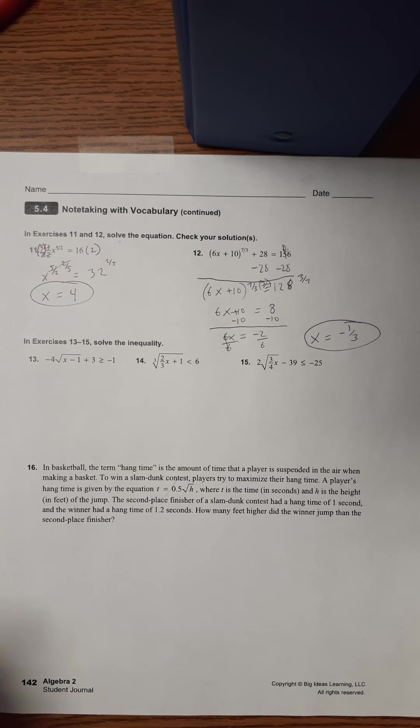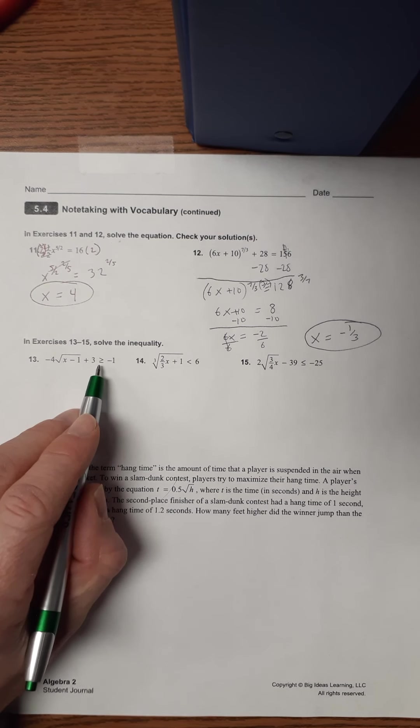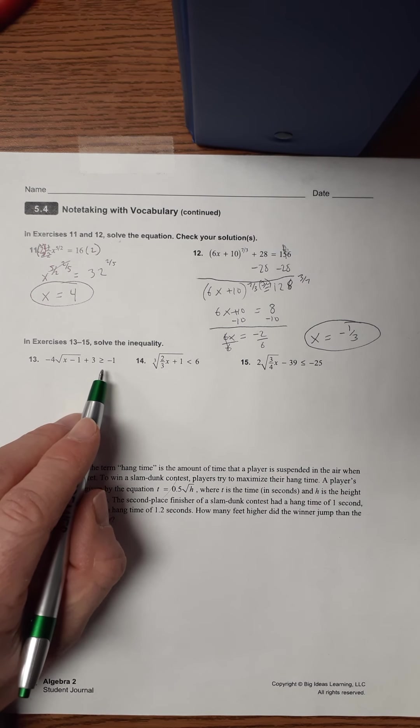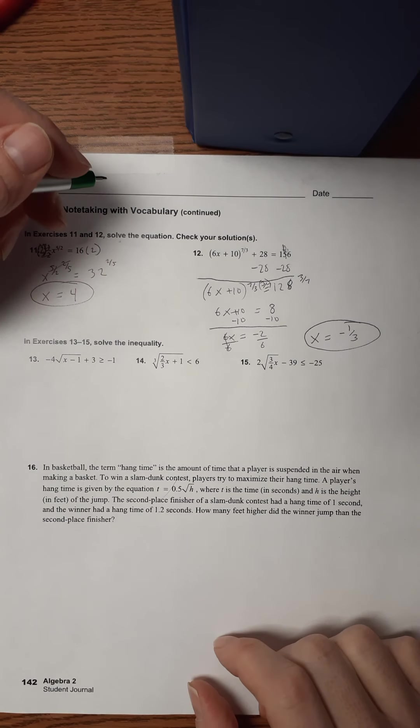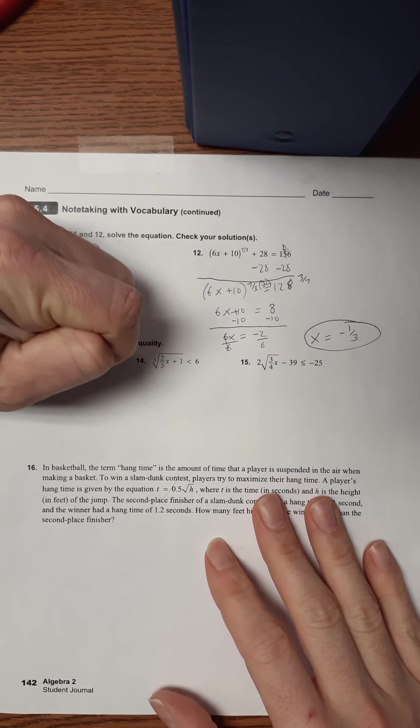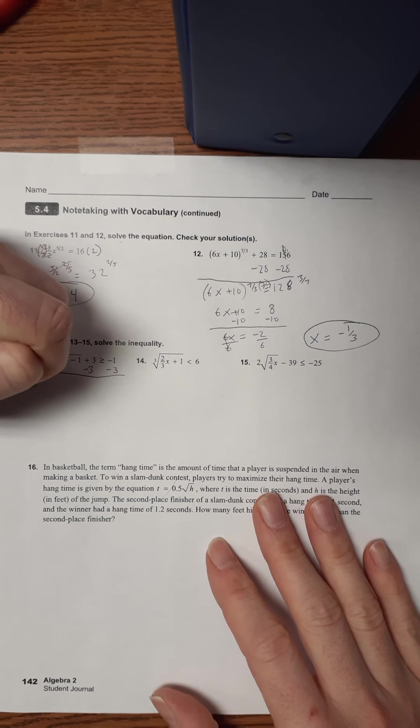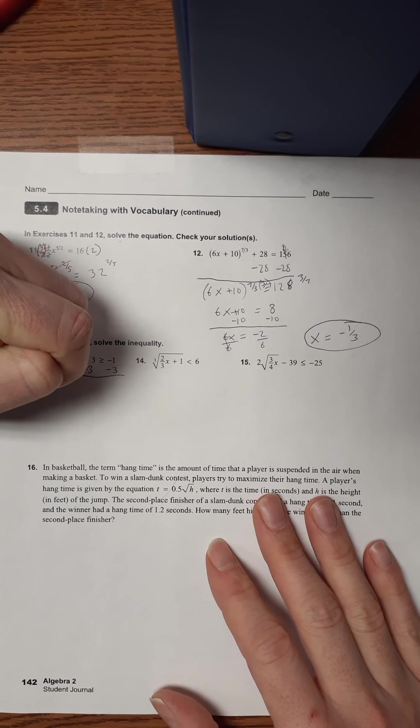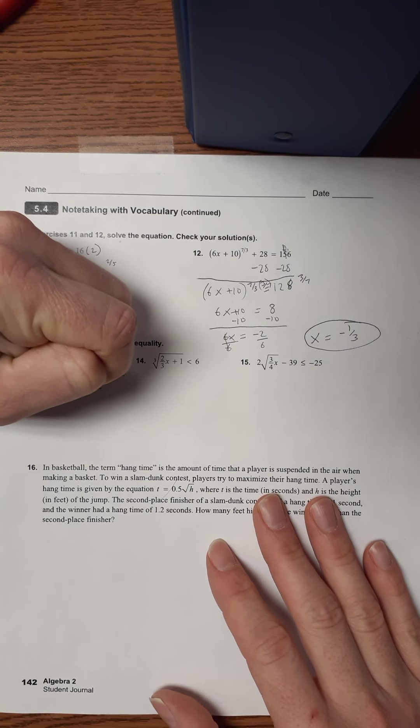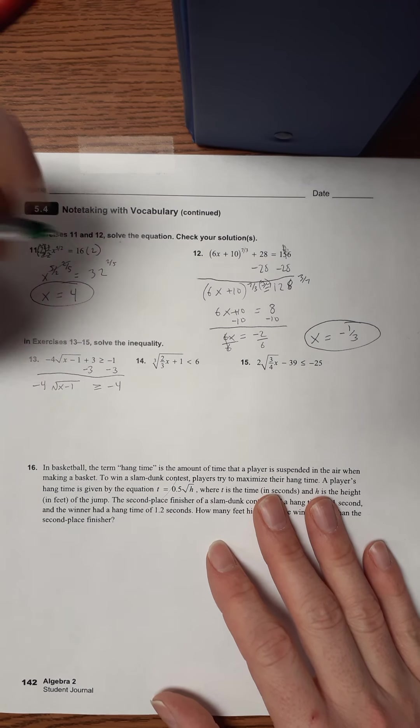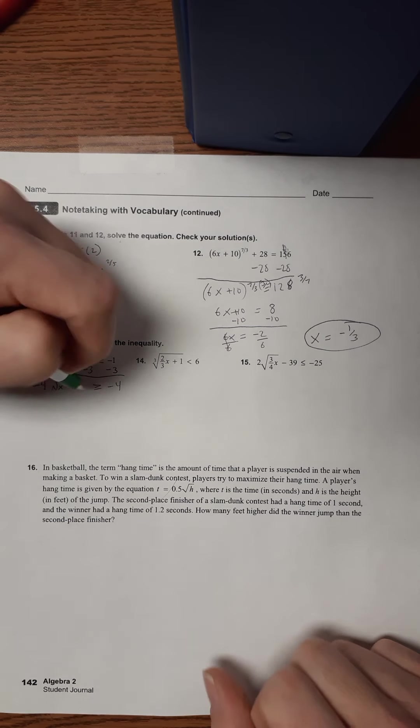So now we're gonna do some inequalities. Same deal, except we've got a greater than or equal to sign. So let's do number 13. Still first step is the same. Isolate the radical. Negative 4. So now we have to divide each side by negative 4.